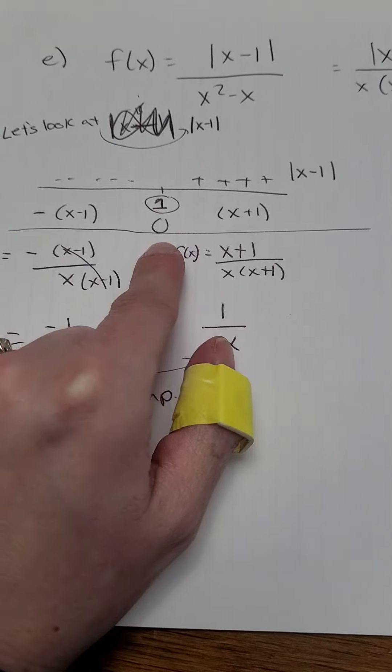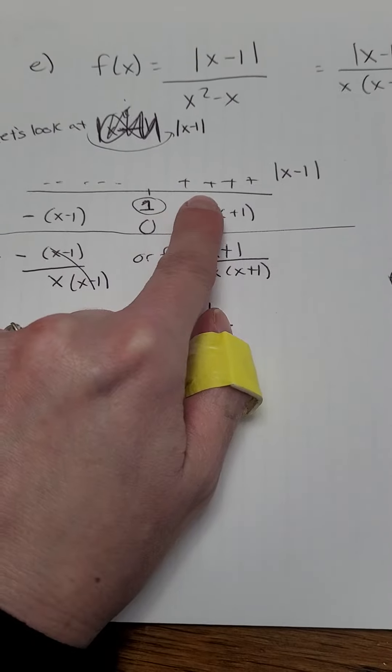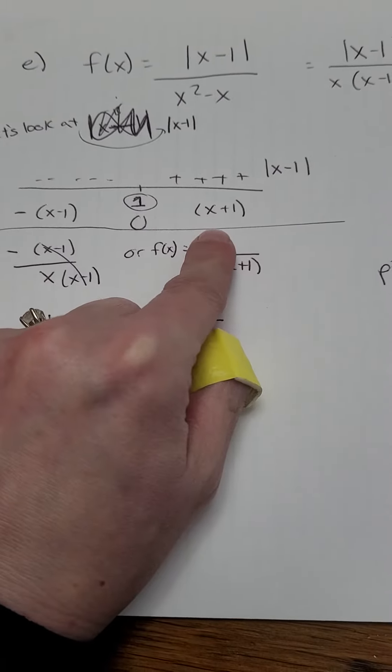And I know that at 1, the absolute value is 0. Everything above 1 is positive, so it's going to look like itself.